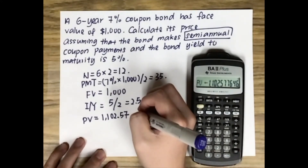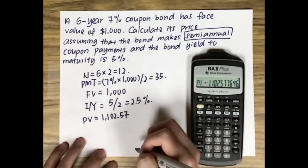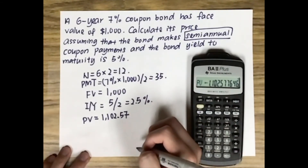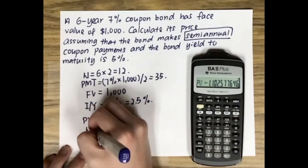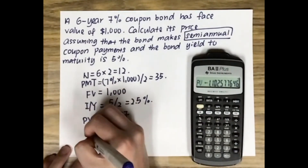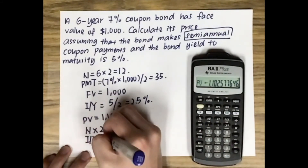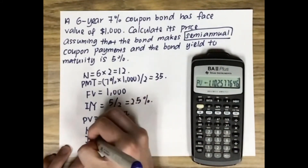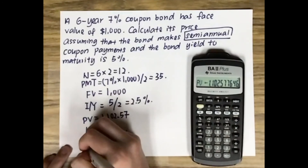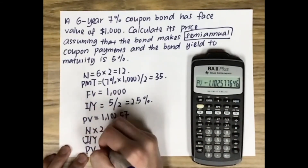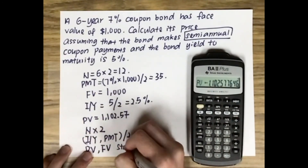Because the coupon rate is higher than the yield to maturity, it makes sense that the price of this bond is higher than the face value. So we can note the rules for a semi-annual coupon question: multiply N by 2, divide IY and PMT by 2, and PV and FV stay the same.